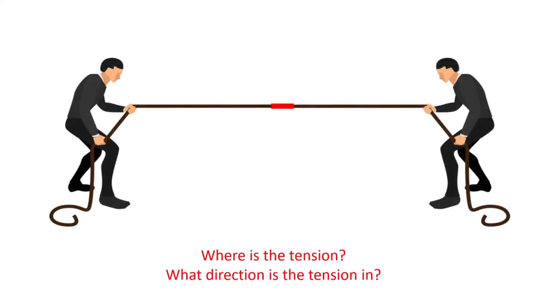Today we're going to return to forces and motion and look at connected particles — how can particles be connected and what additional forces do we need to consider? Starting with a simple situation: two people pulling on a rope from opposite ends. The force within a string, rope, or chain is tension. Tension will always act in the opposite direction to the force it is a reaction to.